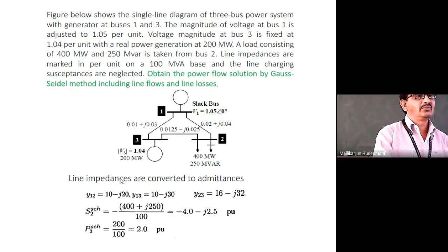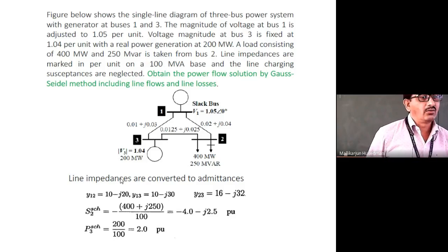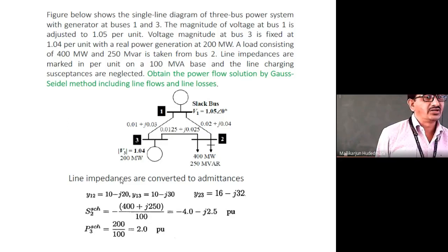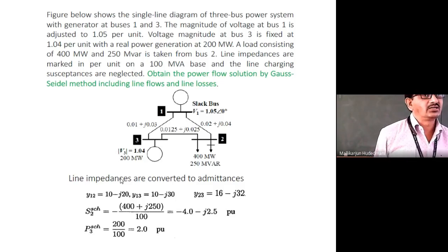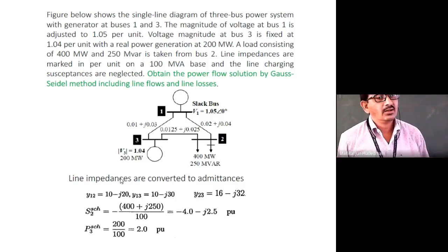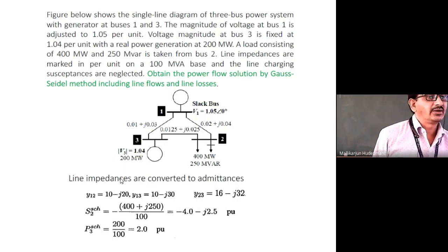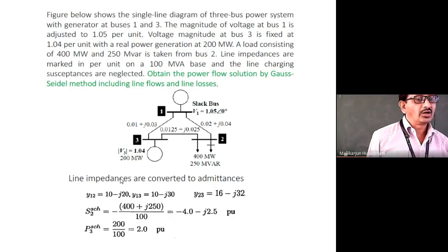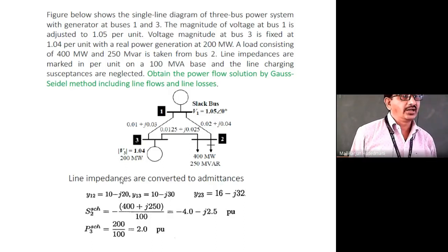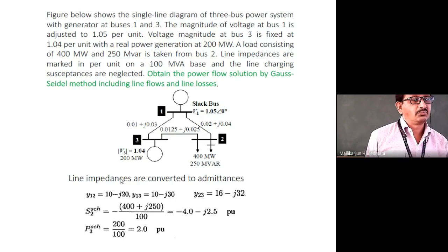If 1∠0 is used instead of 1.04 for the generator bus initial guess, the angle will have a minor influence but no major error. However, using the scheduled voltage 1.04 as the initial estimate shows understanding of Gauss-Seidel technique. Examiners check this substitution — using 1∠0 suggests unfamiliarity with the technique. Hence it is advisable to use the scheduled voltage as the initial guess for PV buses.